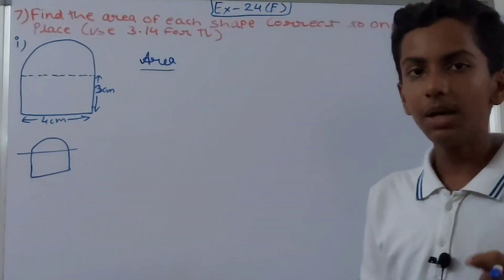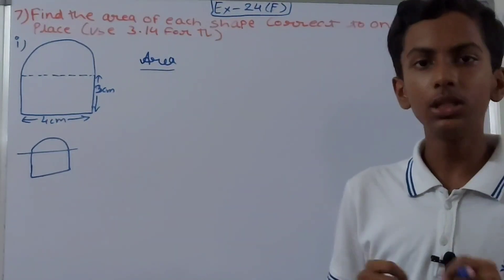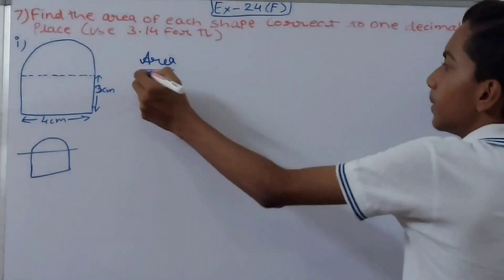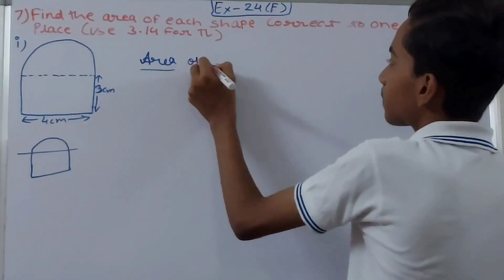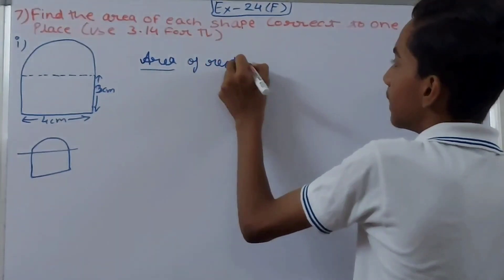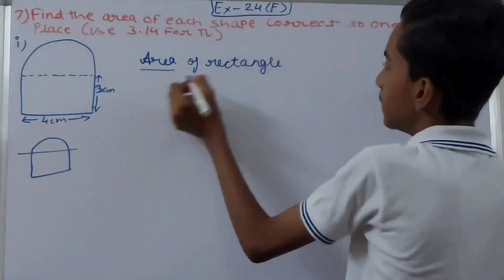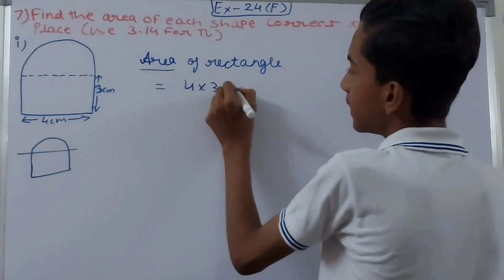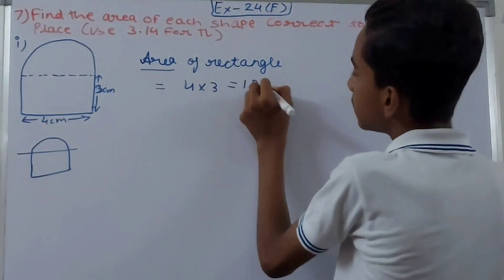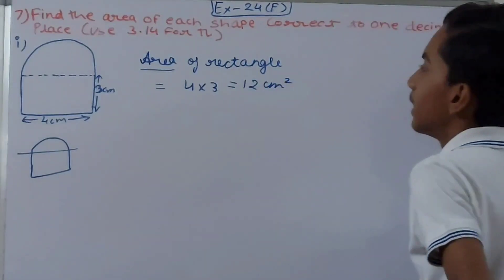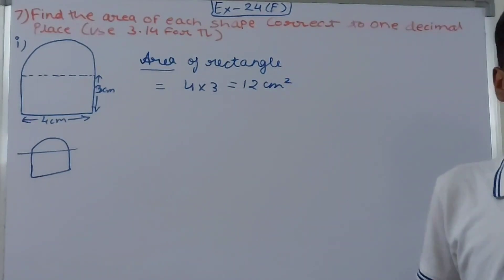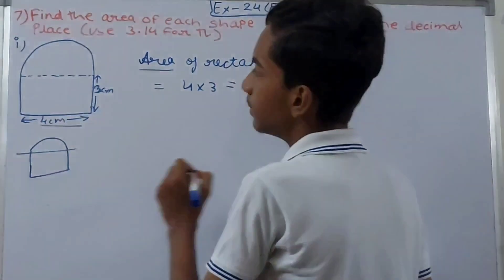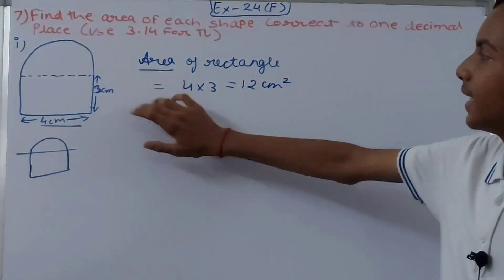We will find the area of both shapes — rectangle and semicircle — separately, and after that we will add the two areas. The area of the rectangle will be 4 into 3, that is 12 square centimeters. So the area of the rectangle is 12 square centimeters.